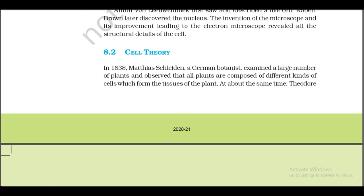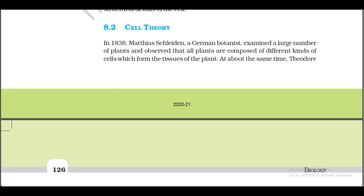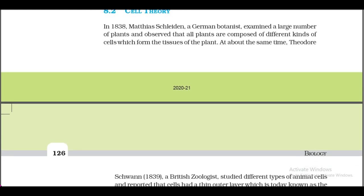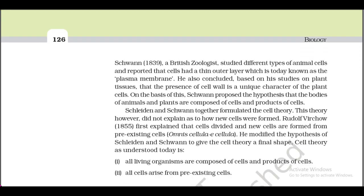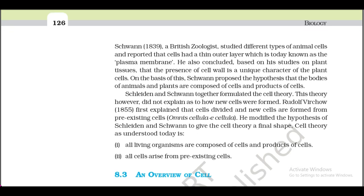Section 8.2: Cell Theory. In 1838, Matthias Schleiden, a German botanist, examined a large number of plants and observed that all plants are composed of different kinds of cells which form the tissues of the plant. At about the same time, Theodore Schwann (1839), a British zoologist, studied different types of animal cells and reported that cells had a thin outer layer, today known as the plasma membrane.